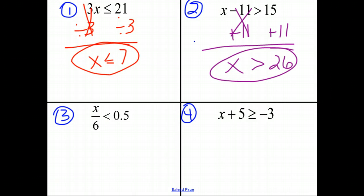For number 3, x divided by 6 is less than 1 half. Well, x is divided by 6, so in order to undo the divided by 6, we need to multiply by 6 on both sides. x divided by 6 multiplied by 6 becomes just x. 1 half times 6 is 3. You can do the decimal multiplication on your own to verify that.